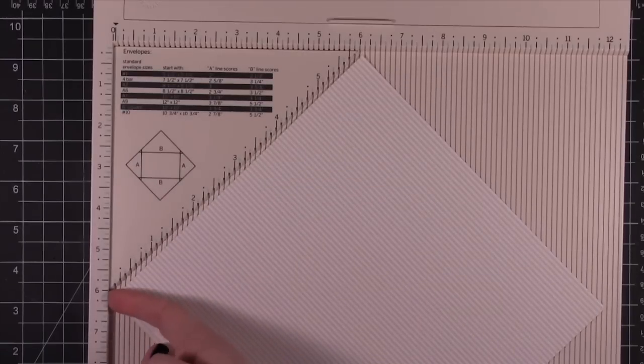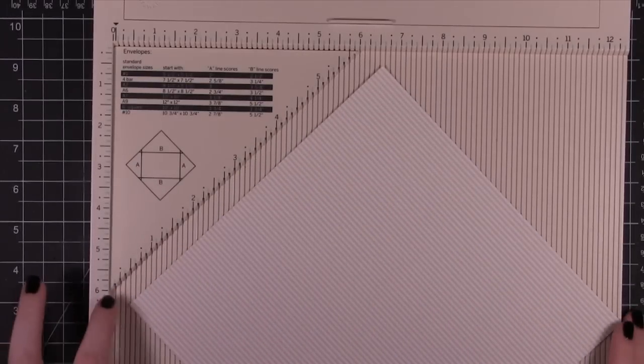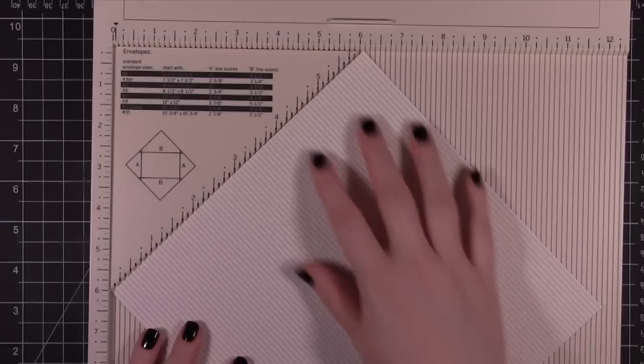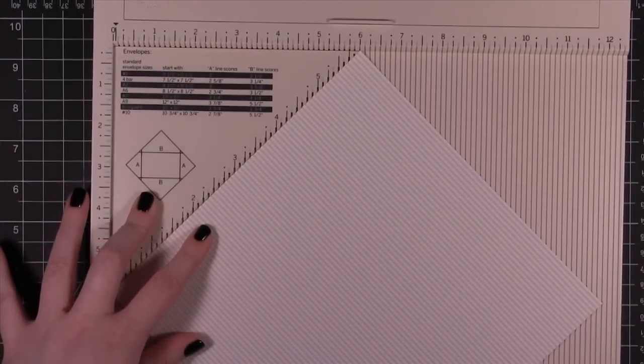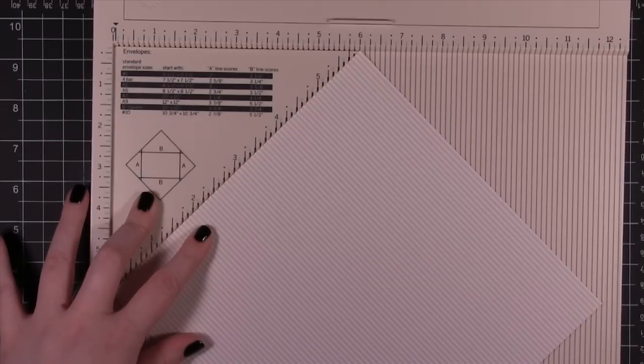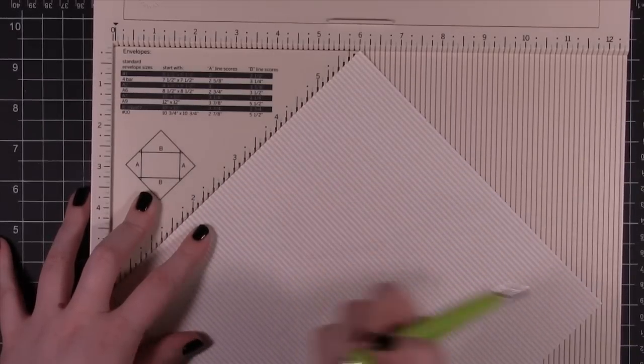No matter what size you're using you want to make sure that the corner goes all the way to the edge here, that railing. I'm going to press that in nicely. Then I'm going to use a stylus or a bone folder or just anything that's going to score the paper.